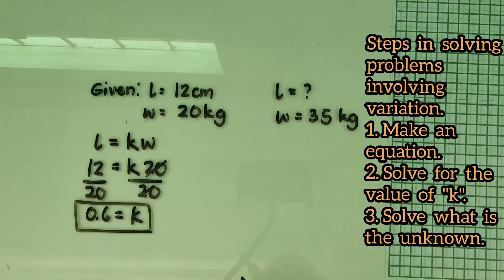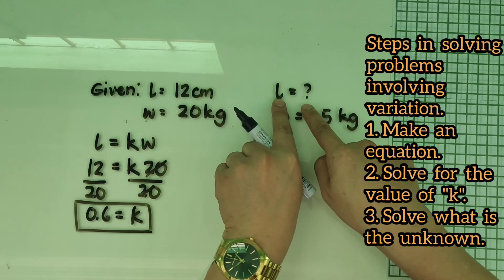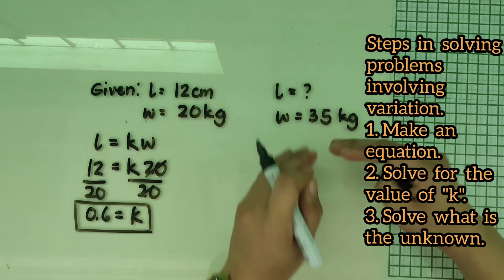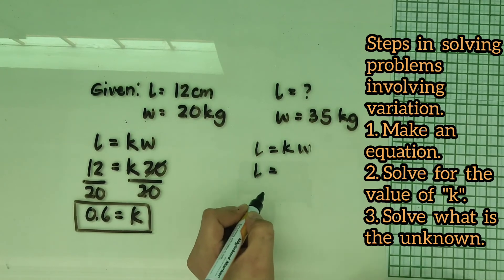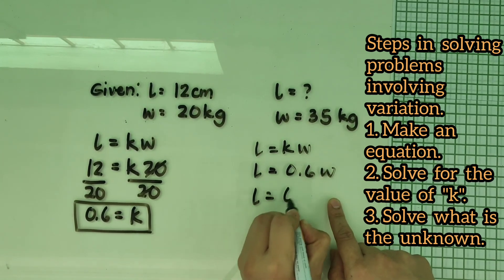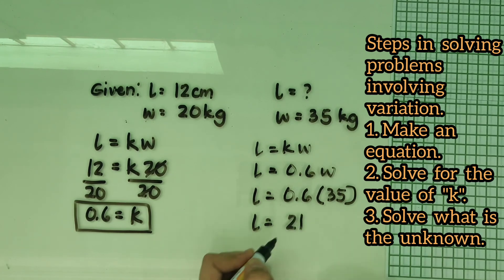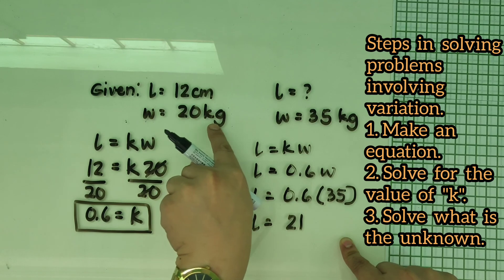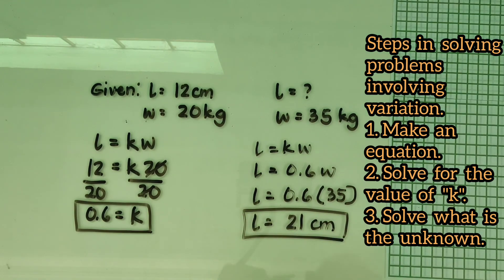Now we use k = 0.6 to find the length when the weight is 35 kg. The equation is L = kW, so L = 0.6 × 35 = 21. The unit of measurement for length is centimeters, so the spring stretches 21 centimeters when a 35 kg weight is attached.